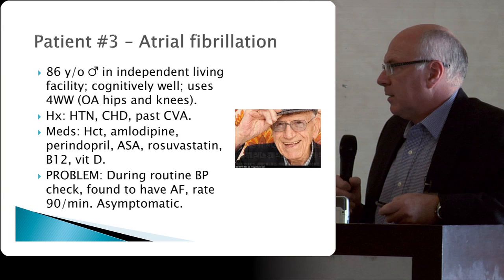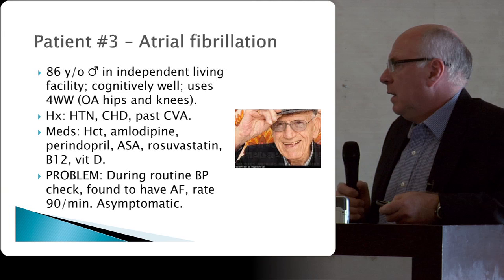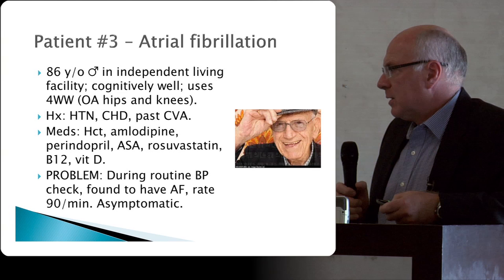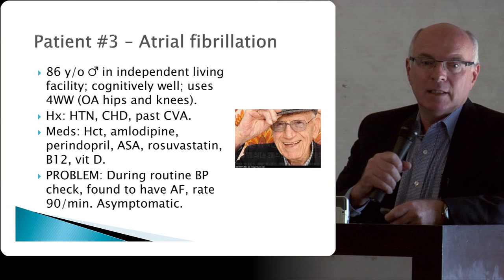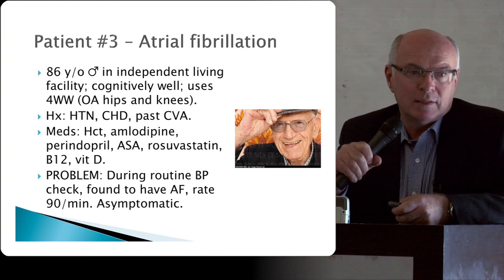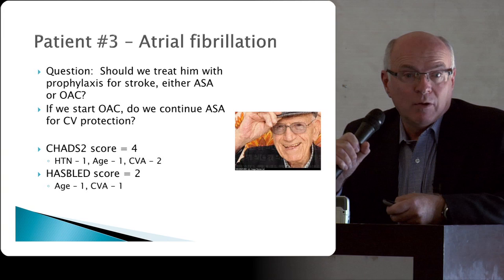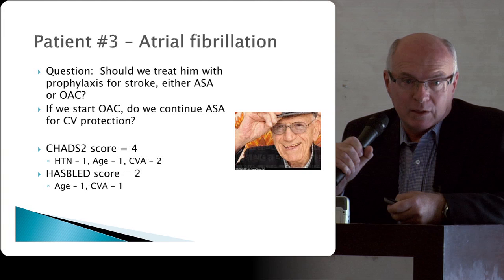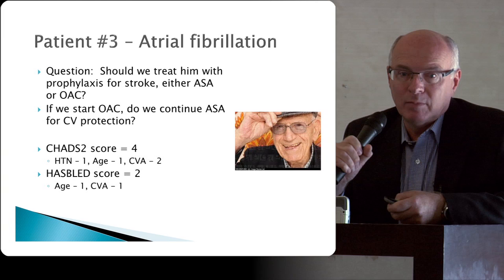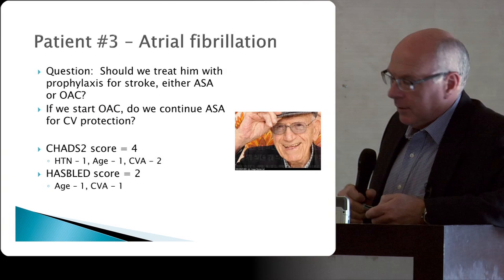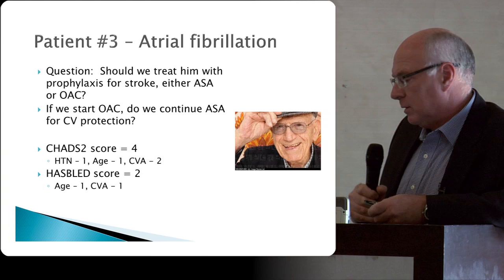Patient three: an 86-year-old man living in a room-and-board facility, cognitively well, using a four-wheeled walker due to arthritis in his hips and knees. History includes hypertension, coronary heart disease, past CVA with little residual. Medications: hydrochlorothiazide, amlodipine, perindopril, aspirin, rosuvastatin, B12, and vitamin D. At a routine visit his pulse is irregular — confirmed atrial fibrillation, asymptomatic. Should we treat him prophylactically for stroke with an oral anticoagulant, or keep him on aspirin? His CHADS2 score was 4 and HAS-BLED score was 2.